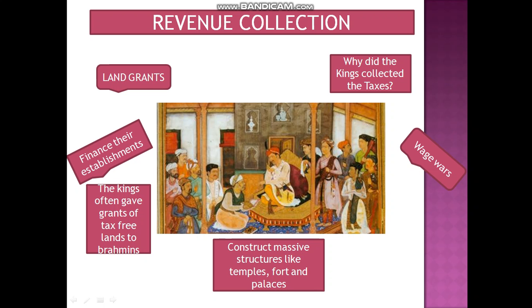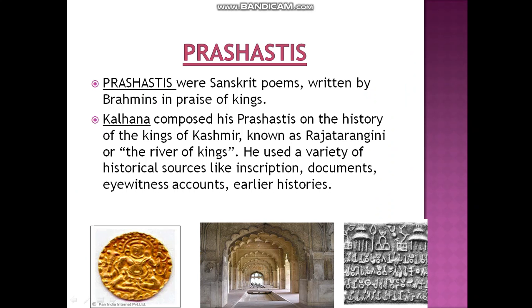The Brahmins were given tax-free land grants with the aim of constructing massive structures like temples, forts, and palaces. This was the whole aim behind the kings collecting revenue.